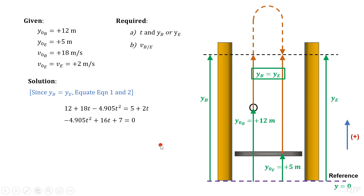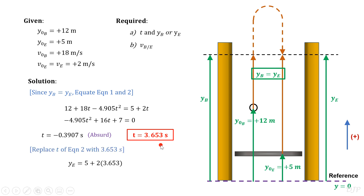Since the final position of the ball and of the elevator must be equal, we now equate the two equations. And then solving this quadratic equation, we will get that t should be equal to 3.653 seconds. To solve now for the required location, we substitute the obtained value into equation two to get an answer of 12.31 meters from the reference.